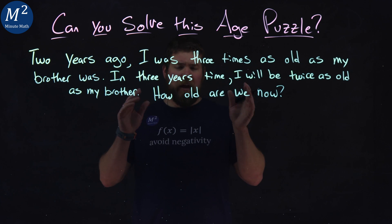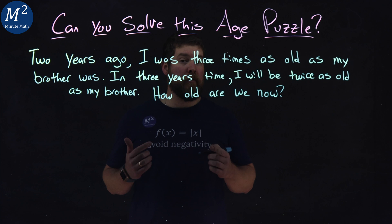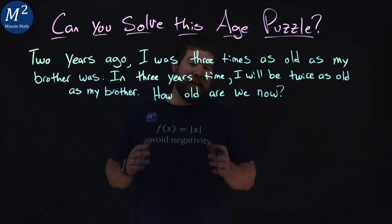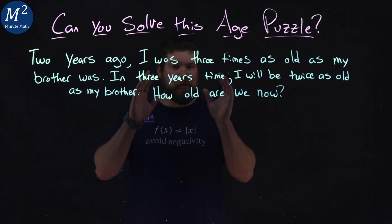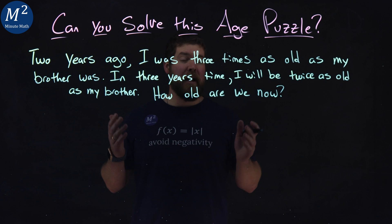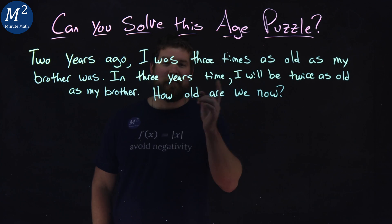I want you to think about this puzzle and see if you can determine the ages of me and my brother right now. If you're impatient though, we're going to solve this problem. I'm going to show you a technique on how to think about these word problems, which can be applied to many other word problems, so it can be helpful not just for this one.